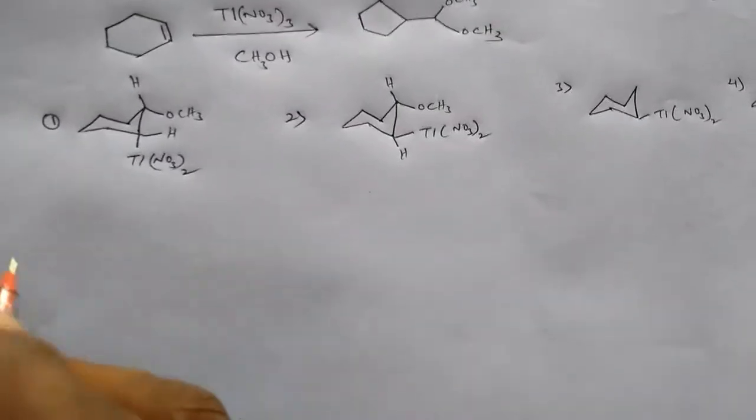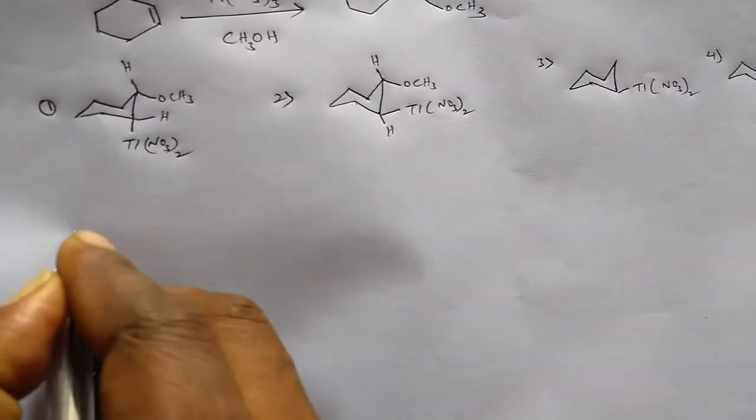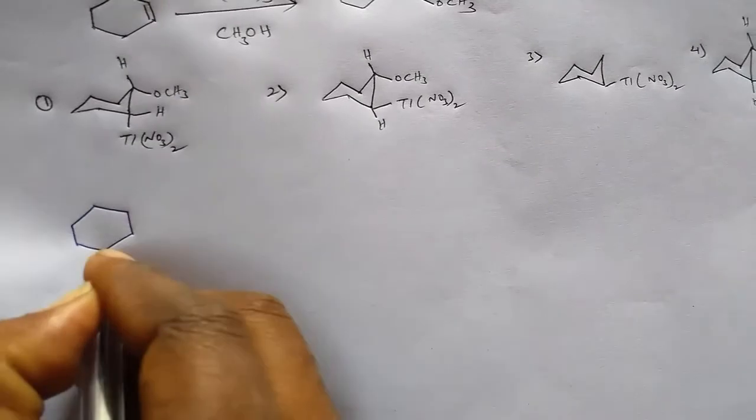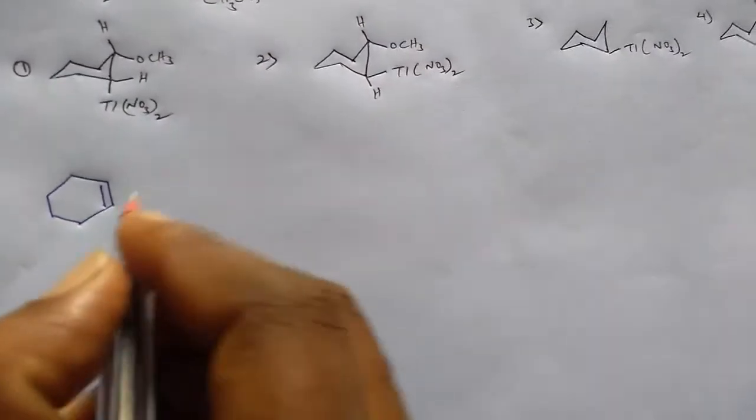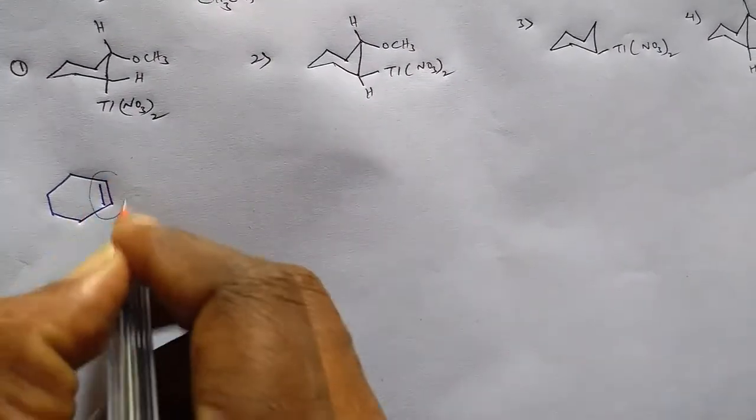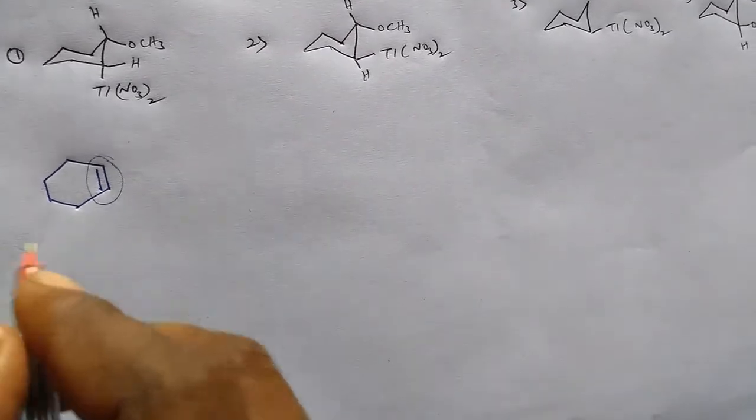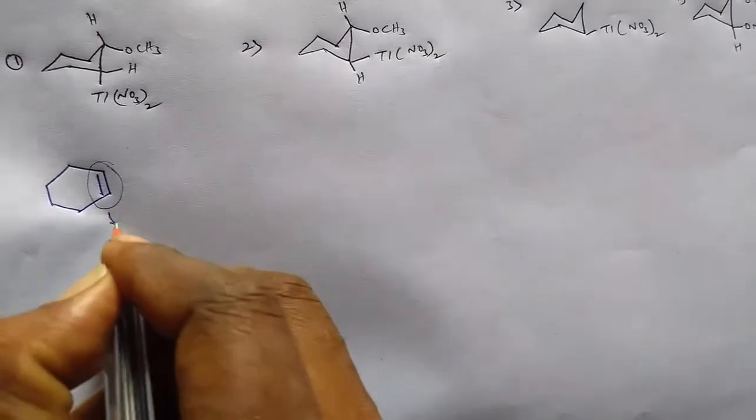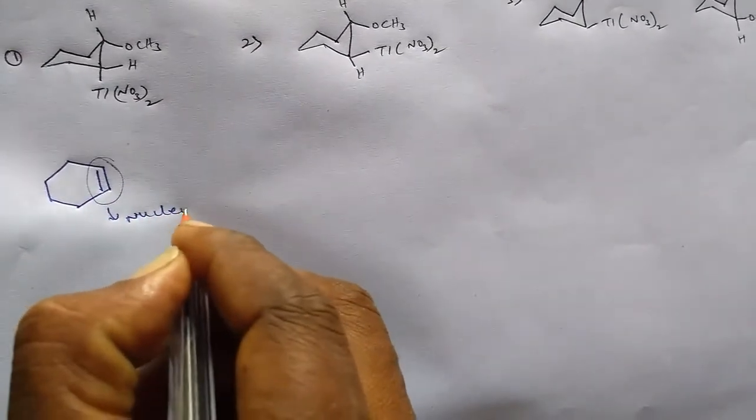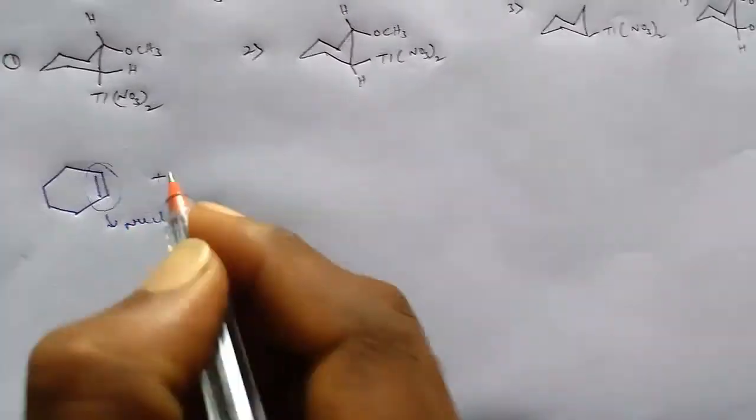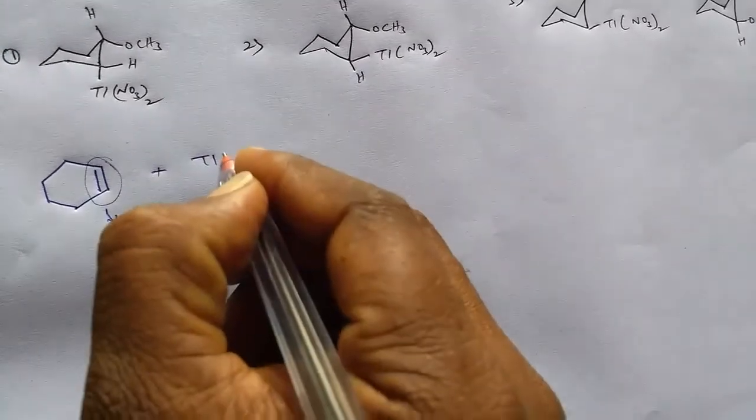First of all, this cyclohexene acts as an olefin. The double bond in cyclohexene acts as a nucleophile and attacks thallium.